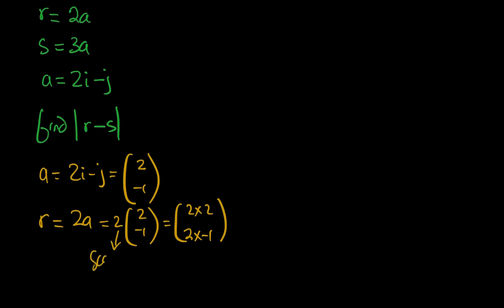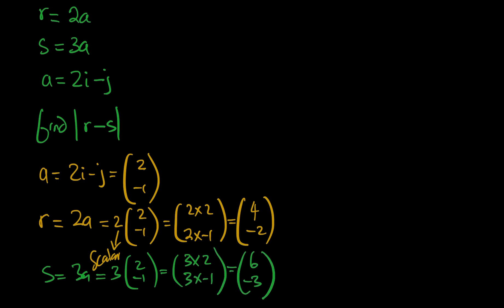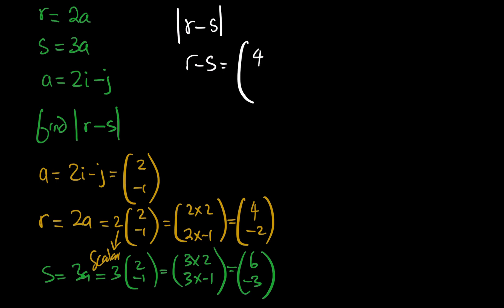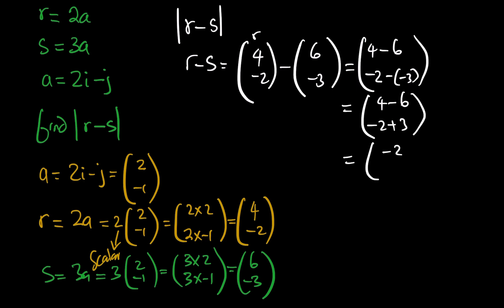For s = 3a = (3×2, 3×(negative 1)) = (6, negative 3). Now r − s = (4, negative 2) − (6, negative 3) = (4 − 6, negative 2 − (negative 3)) = (4 − 6, negative 2 + 3) = (negative 2, 1).